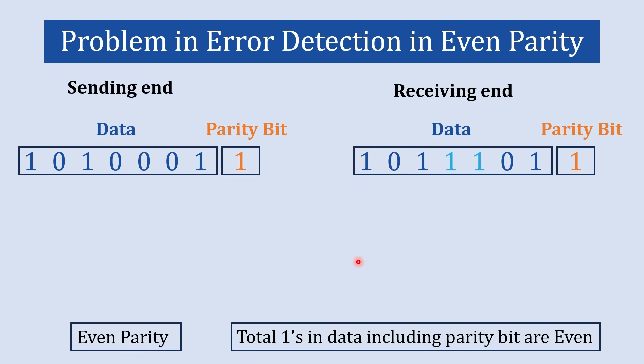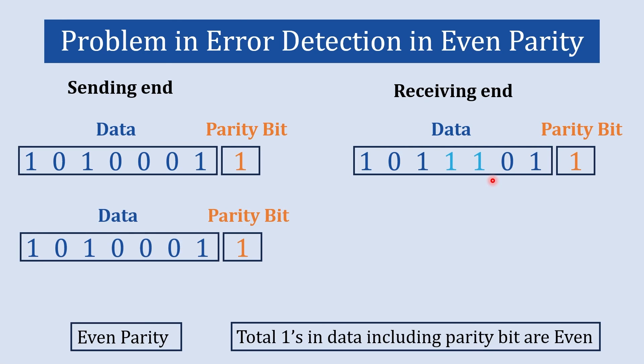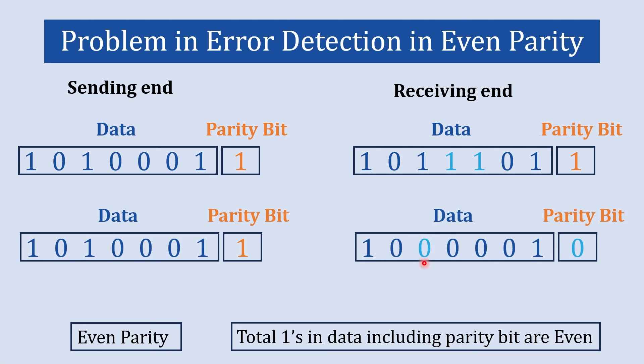For even parity: if two bits change in the data, the circuit counts the ones and finds an even number — so it will not detect this as an error. Likewise, if a data bit and the parity bit both change, there are still even numbers of ones and even parity will not detect the error. From this we can conclude: if the data has one bit or an odd number of bit errors, parity can detect that error. But if the data has an even number of bit errors, parity code cannot detect that error. This is all about parity code.